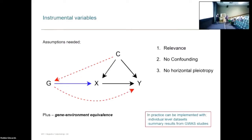In practice, you can implement it with individual-level data where you've got a set of people with their genome-wide summary statistics, measures of exposure, and the outcome. In practice that's quite difficult, because these genetic variants explain a really tiny proportion of the variation in the exposure. That means you need really, really big sample sizes. So we use summary statistics from GWAS studies to actually get at whether or not there's a causal effect.